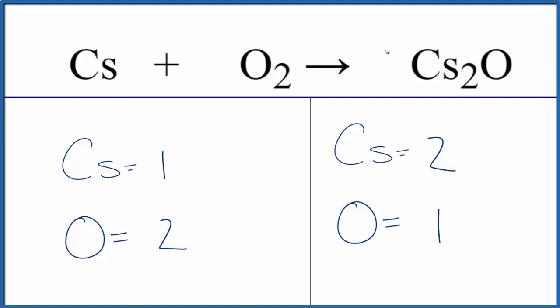So we're going to put a 2 in front of the cesium oxide. Now we have two times two that'll give us four, and the one oxygen times two gives us two.